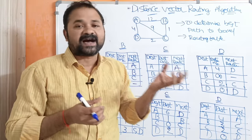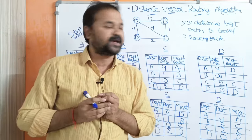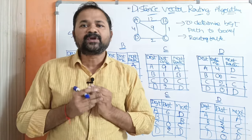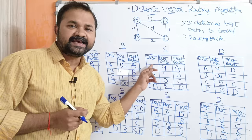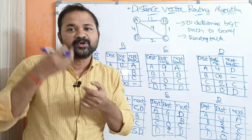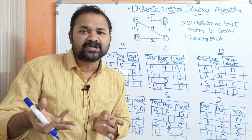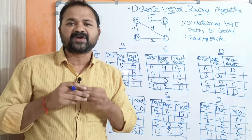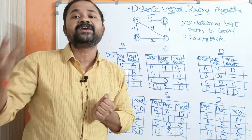The best path means least cost path — shortest cost. Every router will maintain a routing table. The routing table mainly contains three fields: the first field is destination router, the second field is distance to travel to the corresponding destination router, and the third field is next router to visit. Every router will share its routing table information with its neighboring routers.